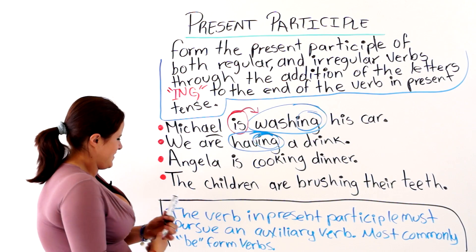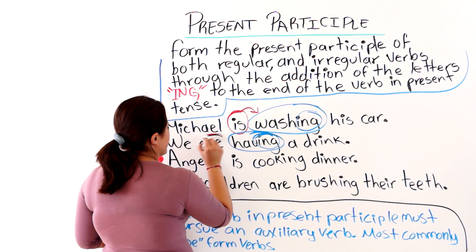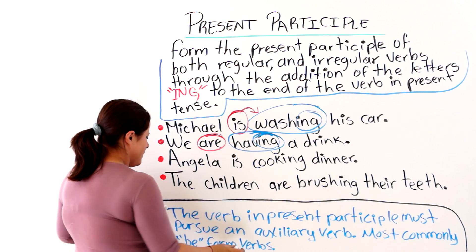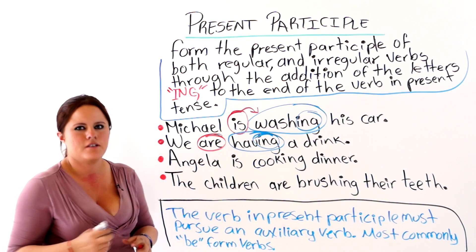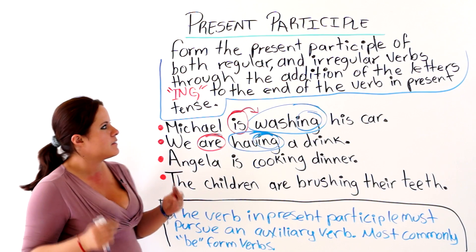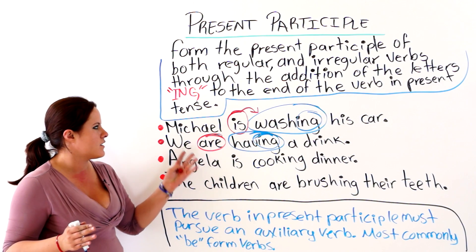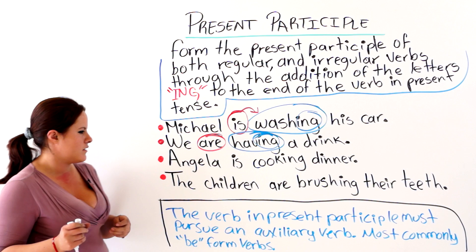We have are, which is a form of the verb be. But it must be in the present tense. You cannot say, Michael was.